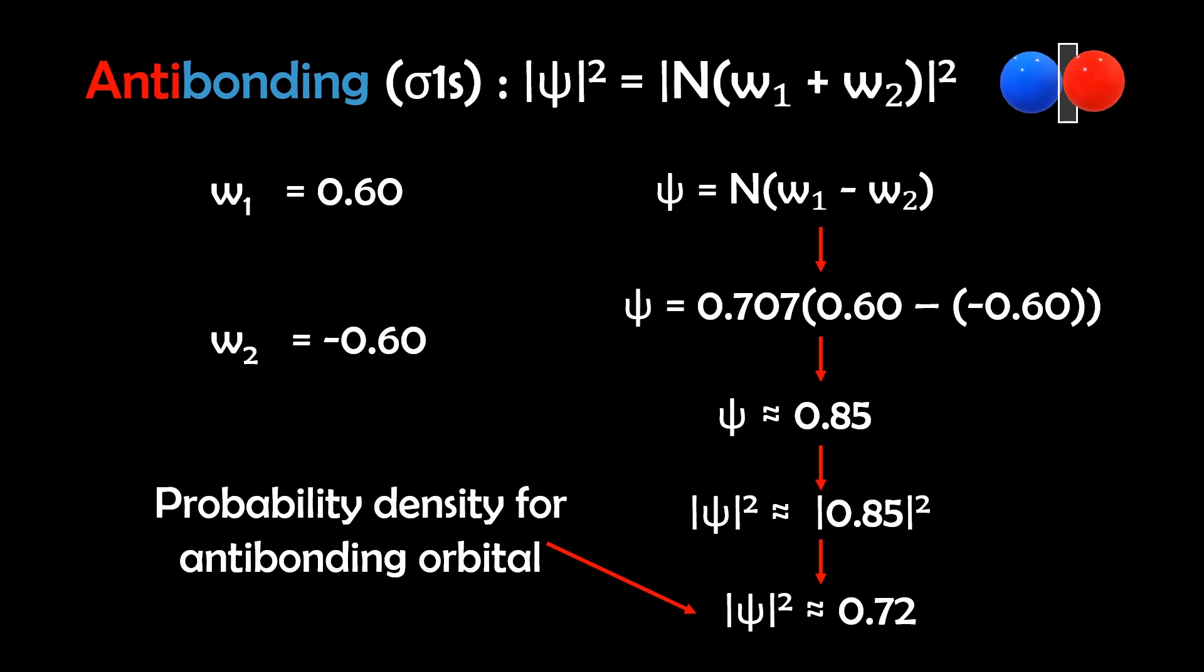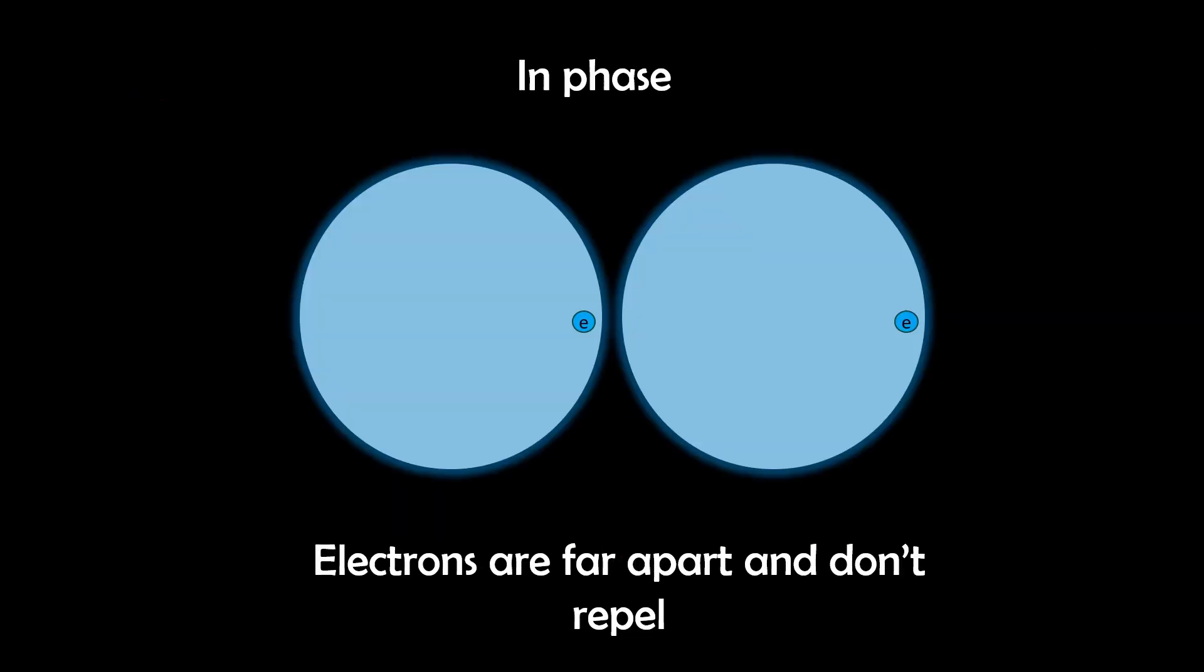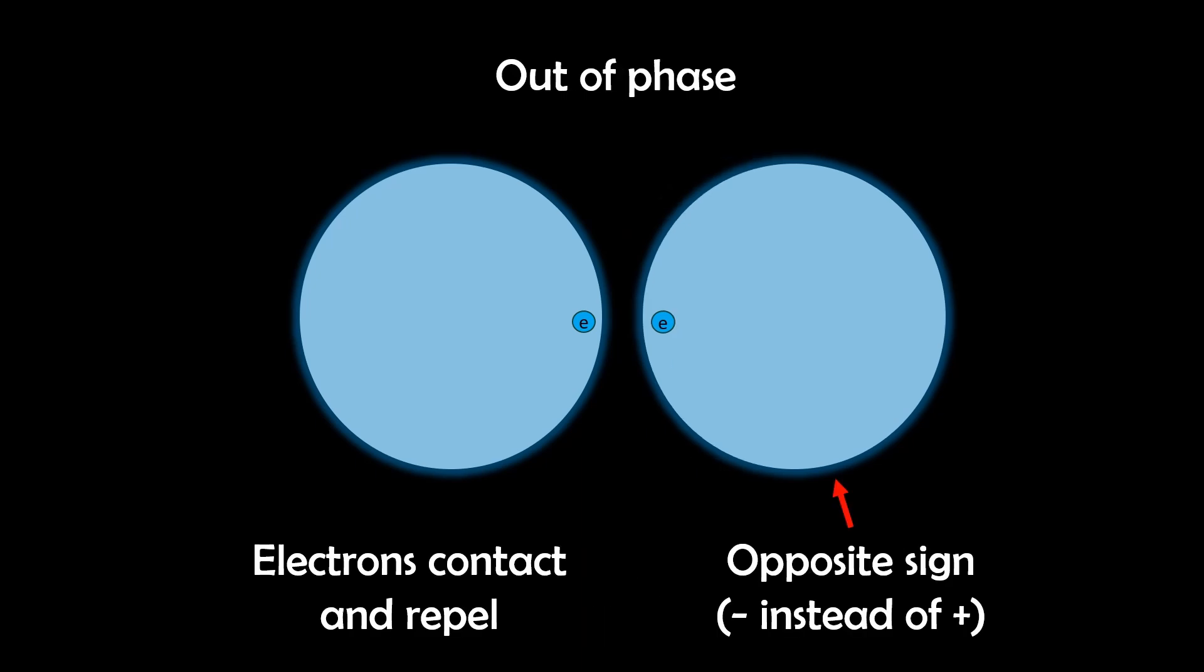To visualize why this happens, imagine two spherical orbitals, each holding an electron. When they're in phase, they're synchronized. You can picture the electrons being in sync, avoiding each other's repulsions and reinforcing the overlap in the bonding region. But if one is inverted, which is out of phase, they interfere destructively in the middle and repel.